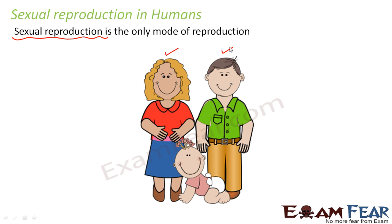In this lesson we are going to talk about something more interesting. We will focus only on human beings and see exactly when a human being is capable of reproduction. Is it like a human being can reproduce anytime? Can he reproduce throughout his life? These are some of the questions which will be answered by the end of this lesson.